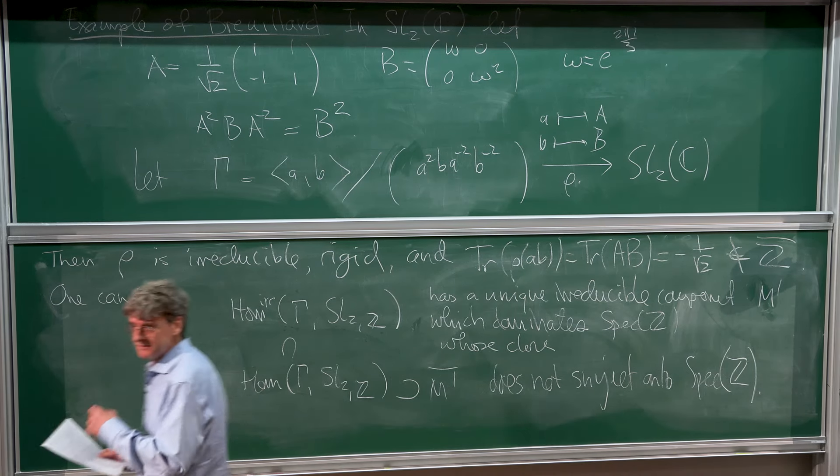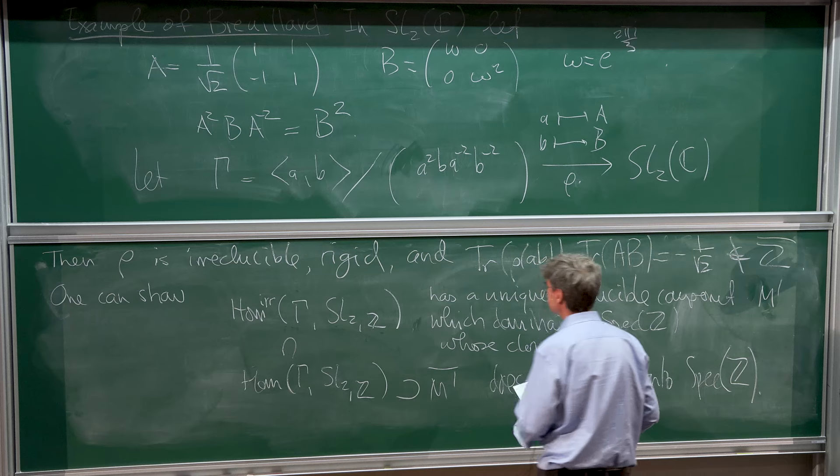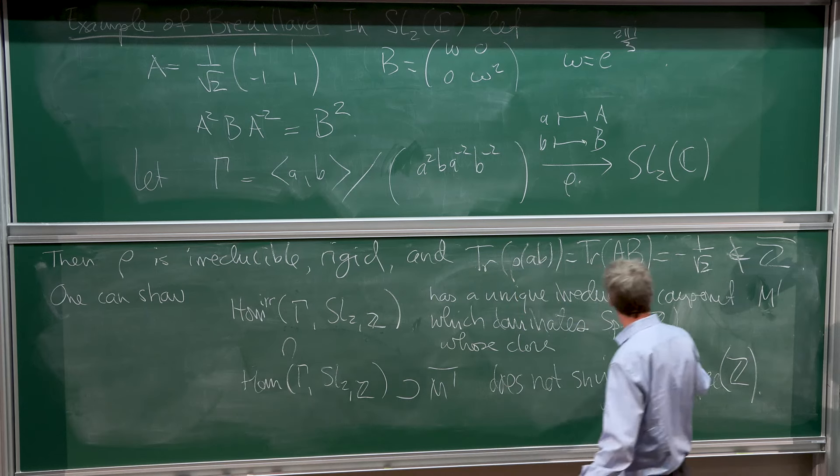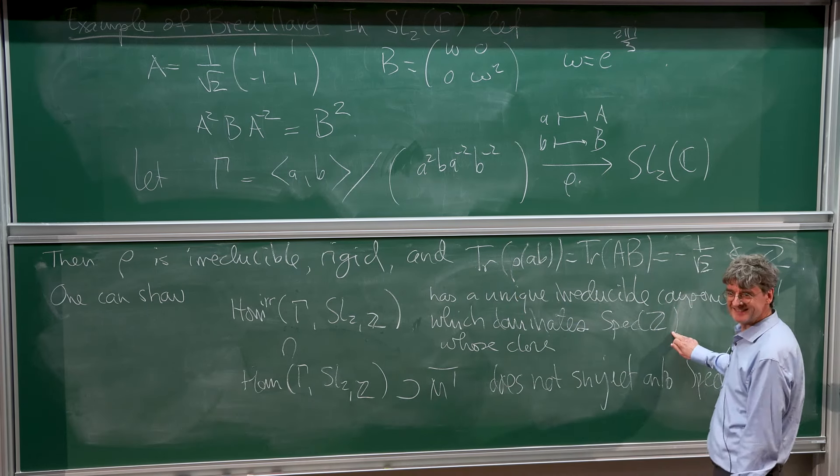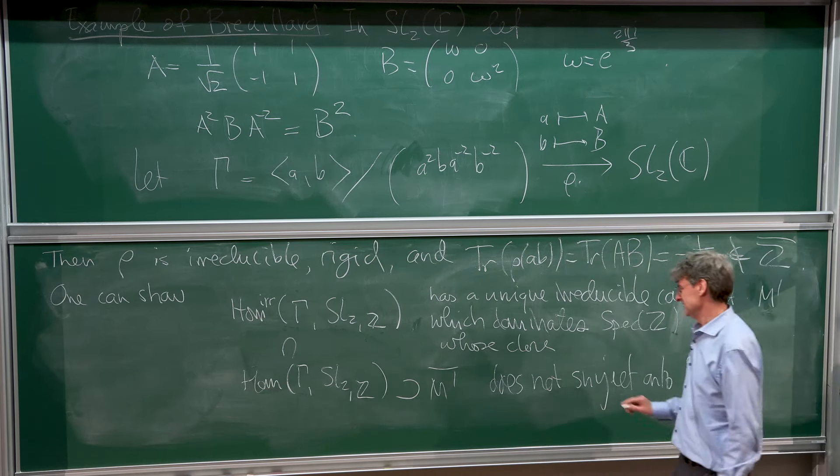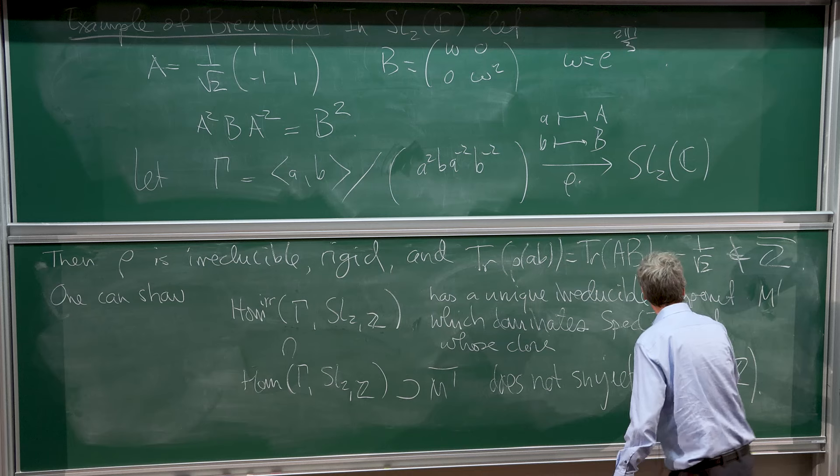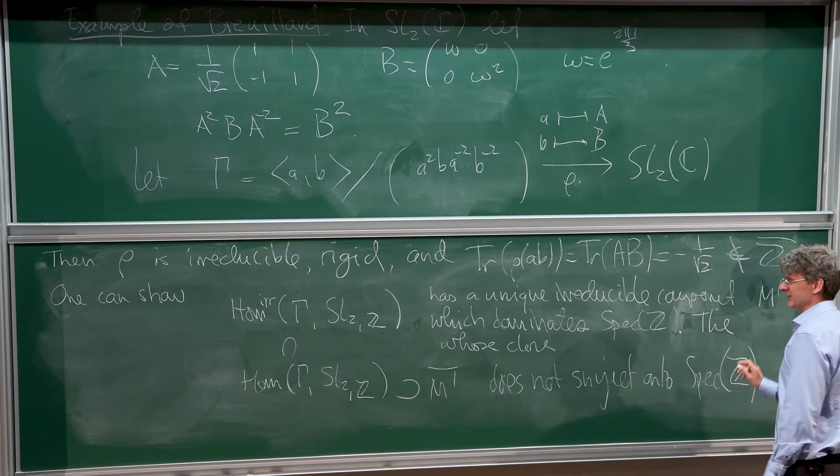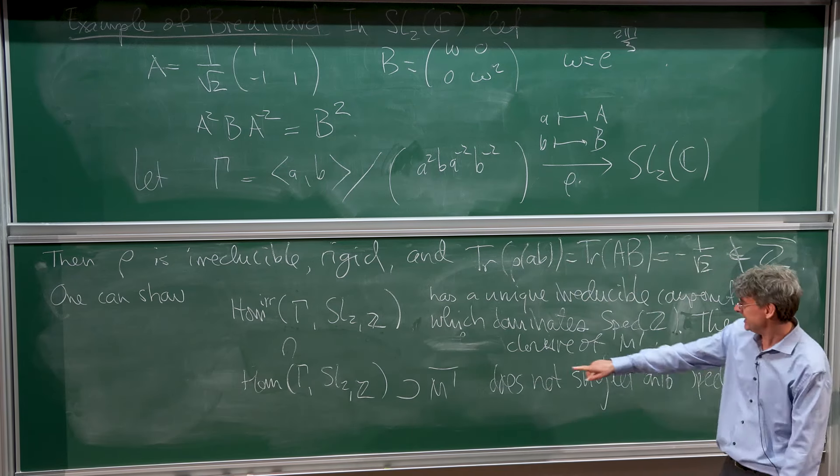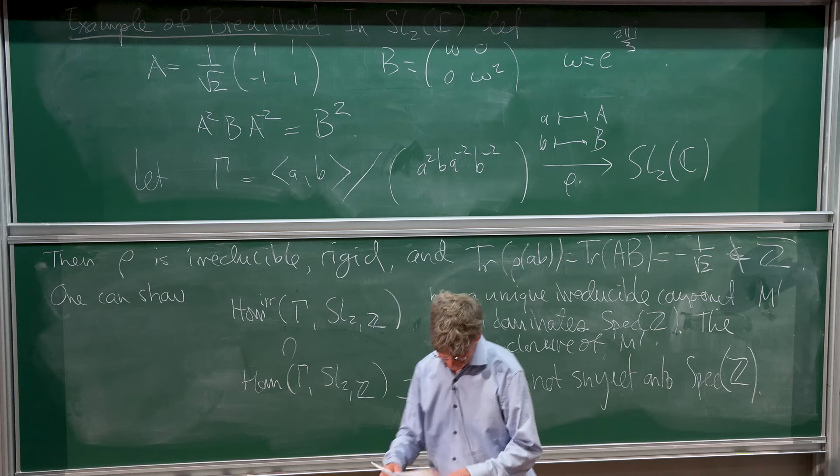It turns out this has a unique irreducible component which dominates spec Z. Let's call it M prime. But its closure in the slightly bigger thing does not surject onto spec Z. The quantifiers - this has a unique irreducible component which dominates spec Z, and the closure of M prime does not surject onto spec Z.